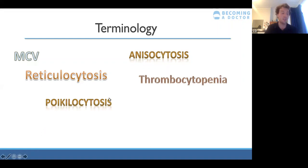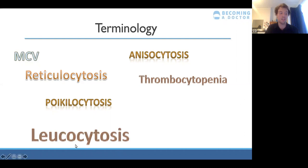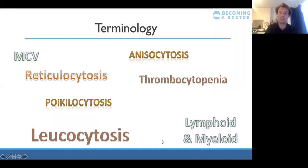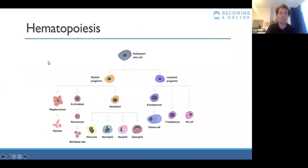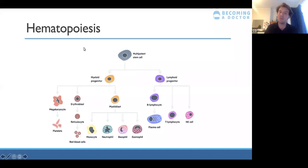Poikilocytosis — comparable to anisocytosis — is the change in shape of red blood cells as opposed to size. Leukocytosis is an increase in white blood cells ('leuko' = white). Then there are the lymphoid and myeloid lineages, which relate to where blood cells come from. This whole process is called hematopoiesis. Understanding cell lineage is important in hematology — for example, reticulocytes are immature red blood cells and are about 20% bigger than a normal red blood cell.